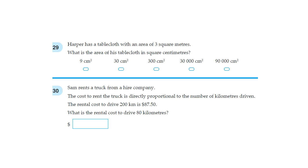29. Harper has a tablecloth with an area of 3 square metres. What is the area of his tablecloth in square centimetres? So let's say the tablecloth was 3 metres by 1 metre. Since in each metre there is 100 centimetres, we can rewrite this as 300 centimetres and 100 centimetres. So 300 centimetres times 100 centimetres would give you, so first of all 3 times 1 would be 3. And then how many zeros are there? 1, 2, 3, 4. So 1, 2, 3, 4 centimetres squared. Therefore the answer will be this one.